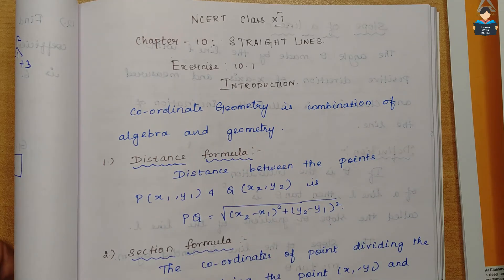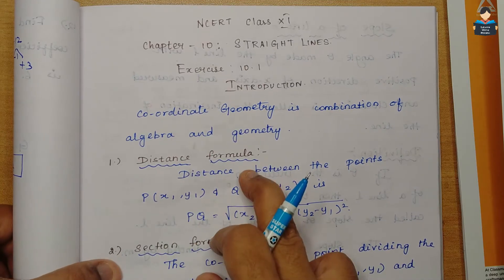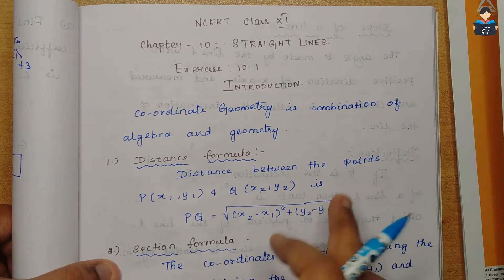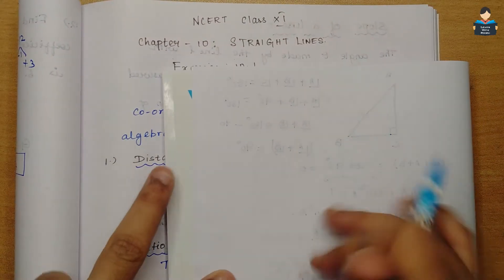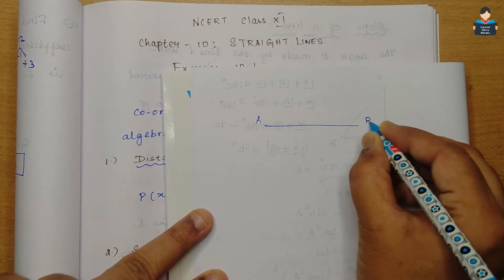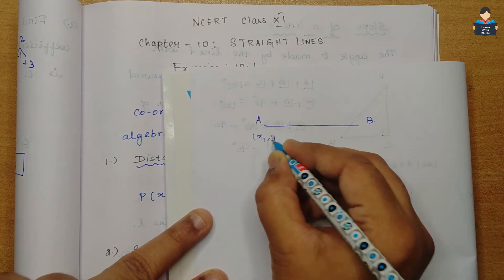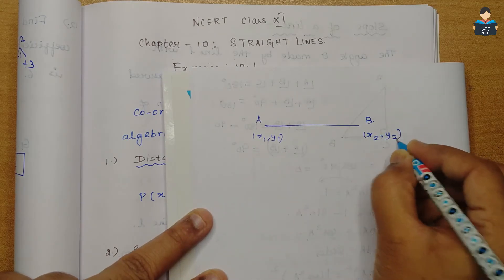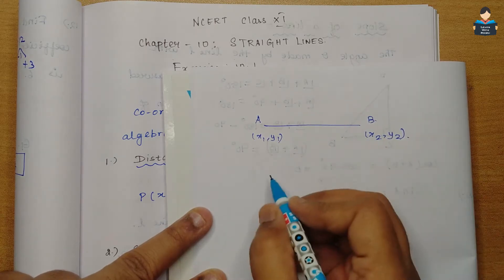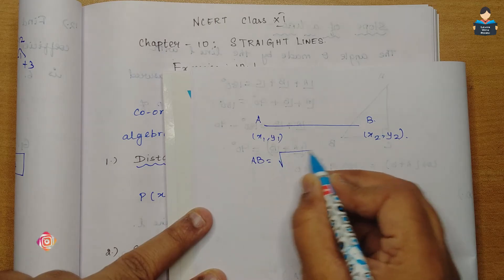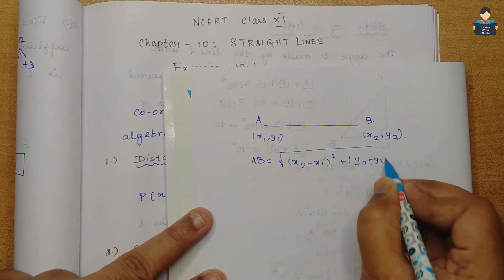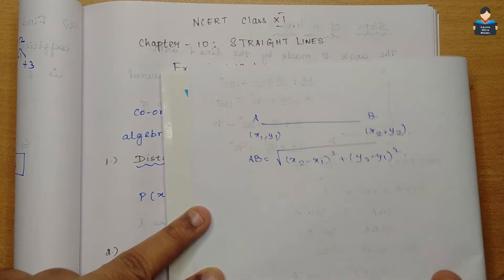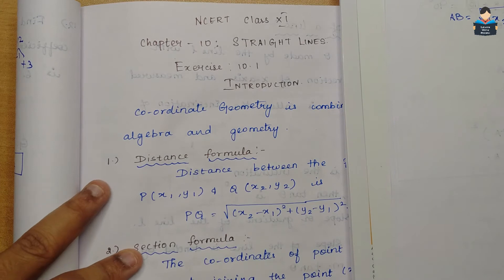In this chapter, we first review the Distance Formula. That is, given point A (x1, y1) and point B (x2, y2), the distance between A and B is the square root of (x2 minus x1) whole square plus (y2 minus y1) whole square.